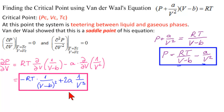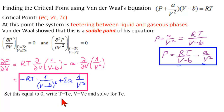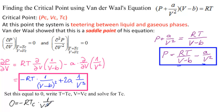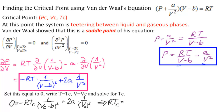Now, because we're looking for TC, VC, and PC, we set this equal to zero with T equal to TC and V equal to VC, and we solve for TC. So we have 0 equals −RTC times 1 over (VC minus B)² plus 2A times 1 over VC³. Solving for RTC, we get RTC equals 2A times (VC minus B)² over VC³.